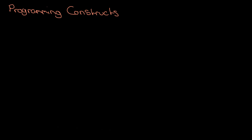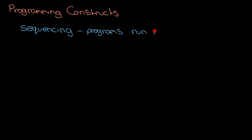We're going to cover the main three types of programming construct. We'll start with the basic one: every single computer program will have sequencing in it. This is just the idea that after you've written a computer program, the computer takes that program and runs it from top to bottom in order.